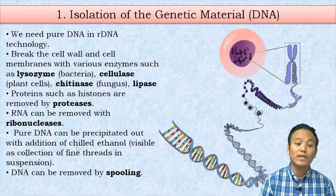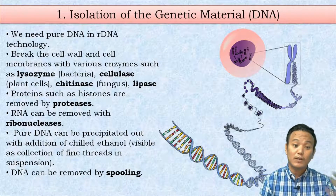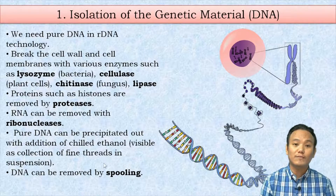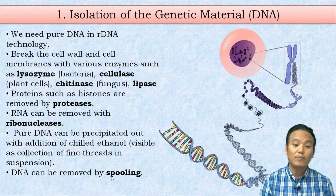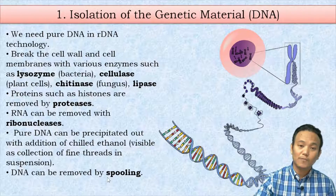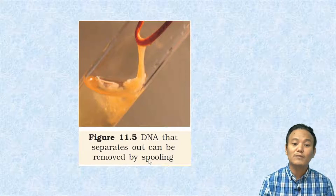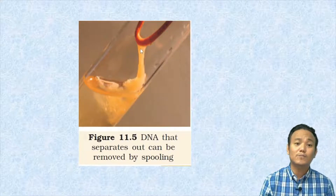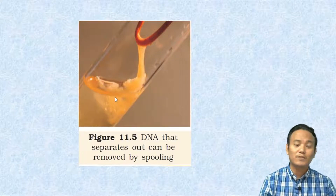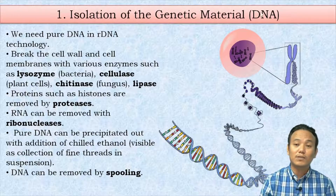The remaining pure DNA molecule can be precipitated out of the reaction mixture with the help of chilled ethanol. When chilled ethanol is added, the DNA precipitates and becomes visible as a collection of fine threads. That fine thread DNA can be removed by a process called spooling, in which we insert a glass rod and pick it up. This is the first step — isolation of the genetic material from the cell.